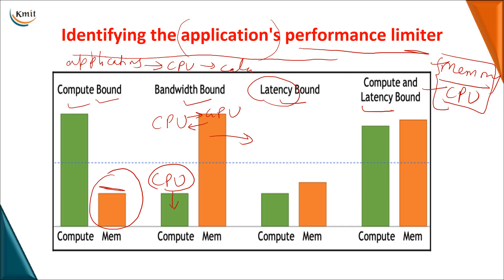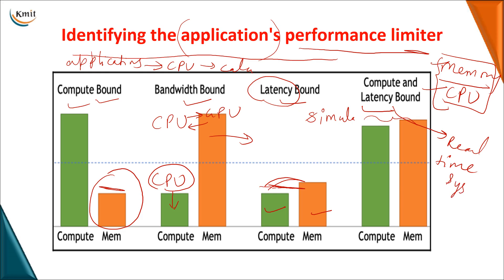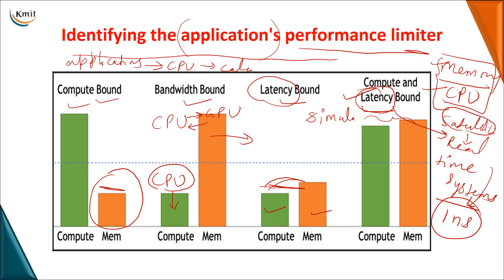Latency refers to the amount of time required for output data to be returned to the user. There should be synchronization between compute and memory — more memory generally means less latency. When compute and latency are bound together, both must be kept in proportion. Compute bound is used for simulation-type applications requiring heavy computation. Latency bound is used for real-time systems — for example, satellite launching, where output must be delivered within a required time such as one nanosecond.